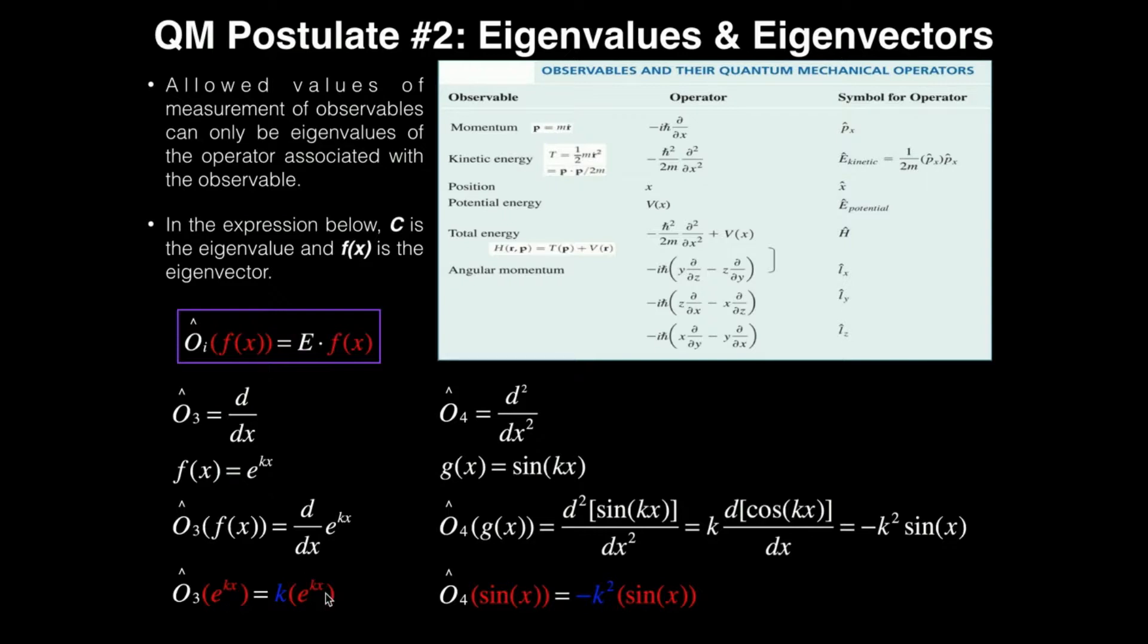If I did not get e^(kx) in any form on the other side, then this would not be a valid eigenvalue. And the way you can think about it is, whatever function you originally operated on, you would have to be able to effectively cancel it out. That doesn't mean you can actually cancel it mathematically here, but conceptually, you should be able to cancel out whatever function it is. And I could cancel out e^(kx). So whatever observable is represented by O3, k is a valid measurement, and it is the eigenvalue, because I have e^(kx) on both sides.